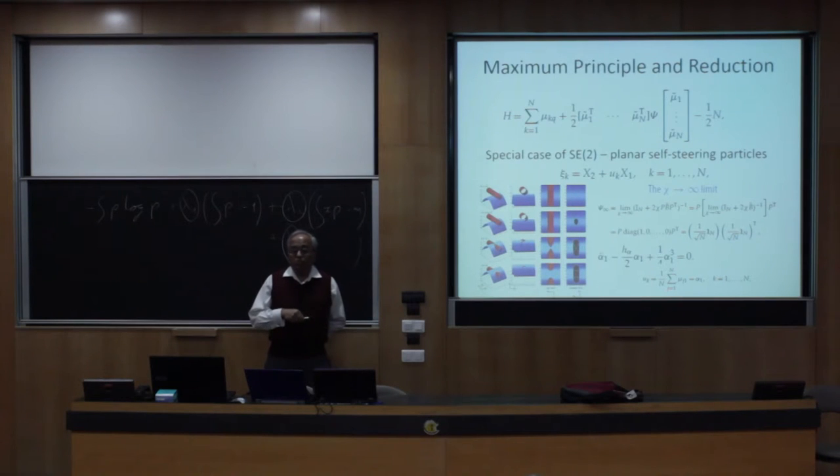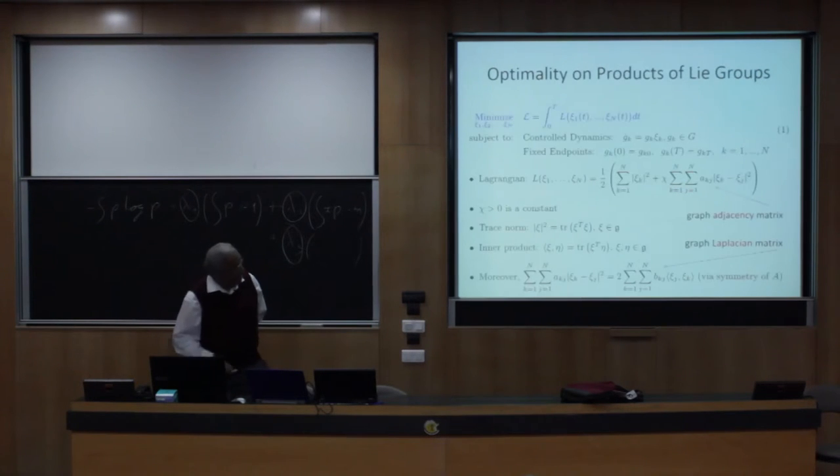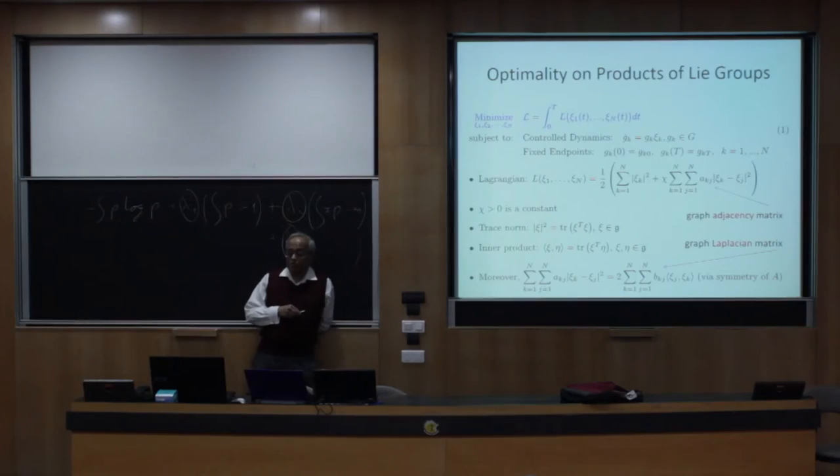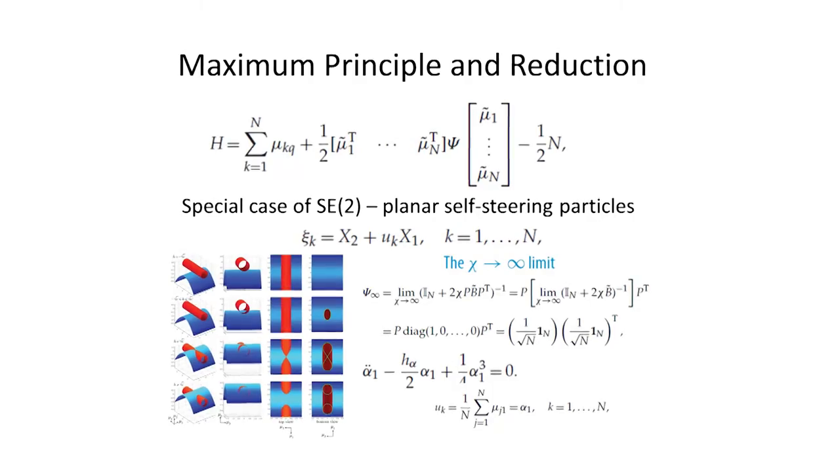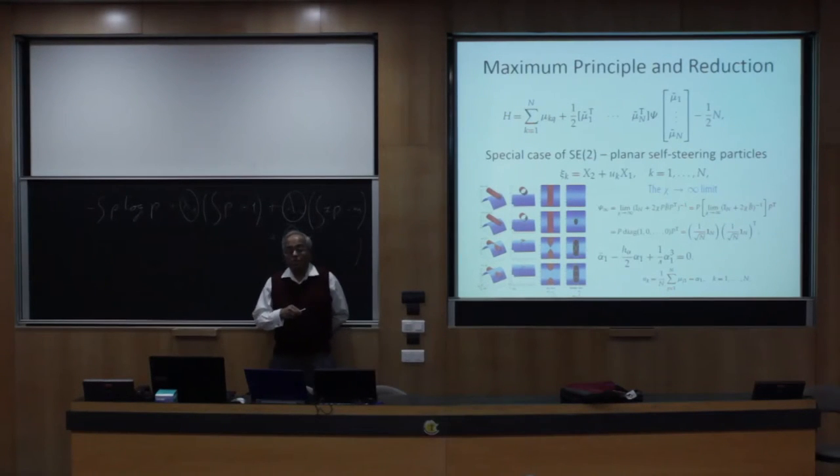And so with such a control, a scalar control for each particle, there are N, capital N particles, and then what can we do about attacking this optimal control problem? There is a powerful machinery of maximum principle due to Pontryagin and co-workers who originated it long time ago, but has undergone many stages of development and extensions. And in that context, one can set up the Hamiltonian for the optimal control problem, which essentially allows you to recognize that this problem that I formulated in the previous slide has a ton of symmetry. Notice that in the Lagrangian, the group elements do not appear, so there is a global product group symmetry associated with this cost functional.